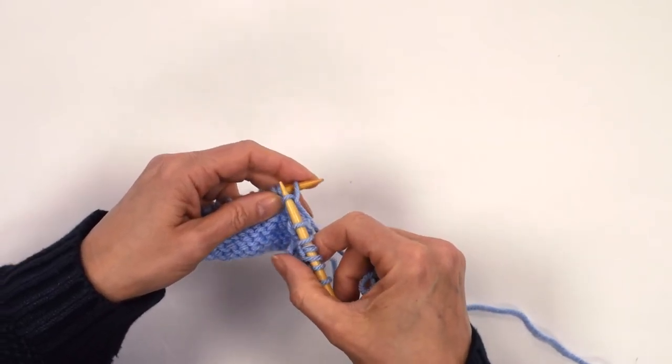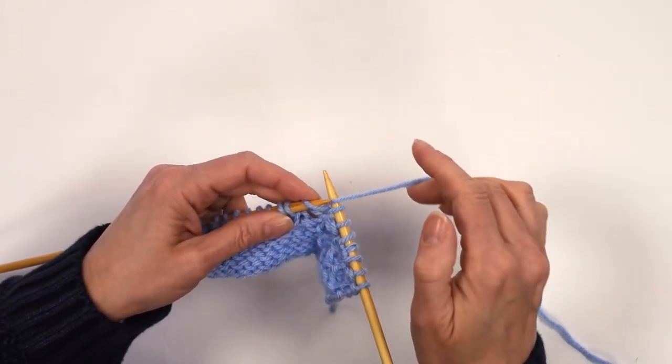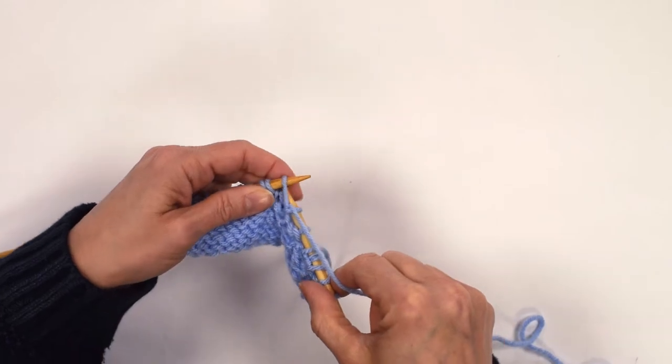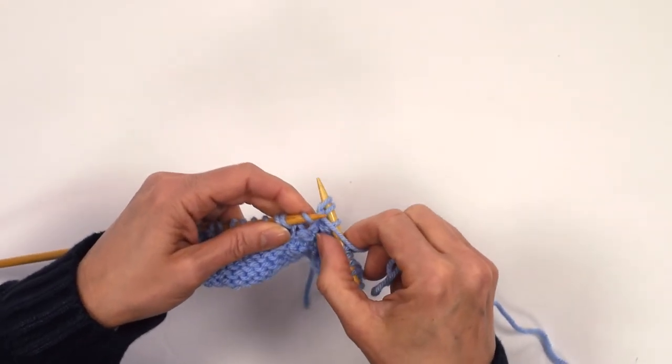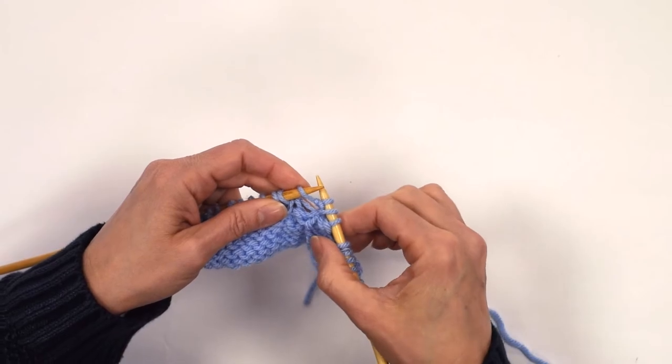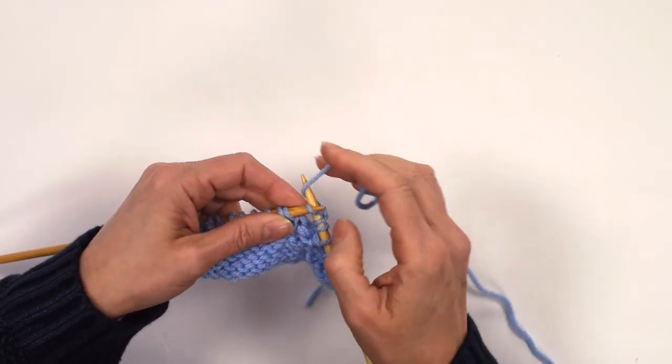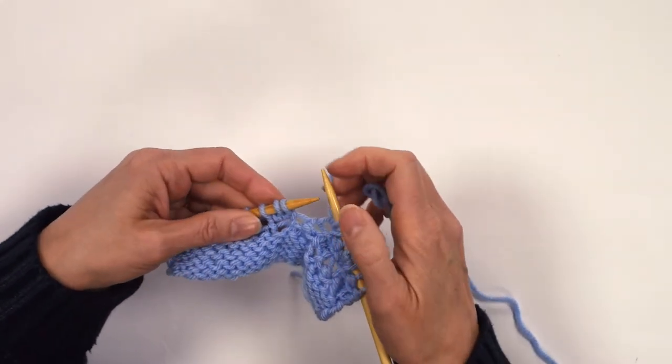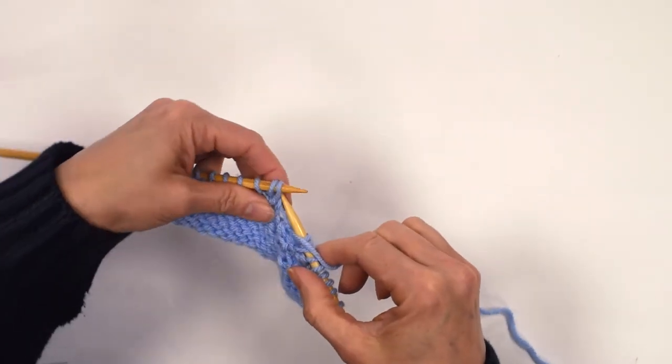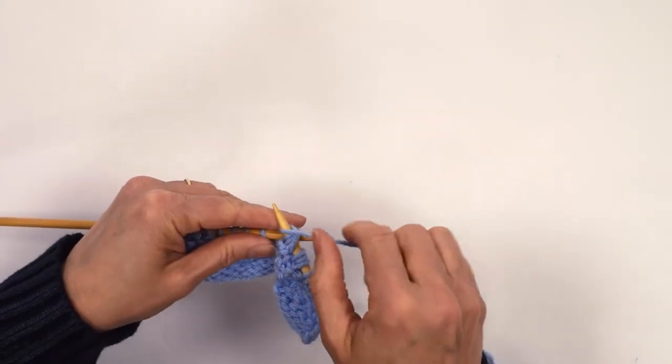So, knit into the front of it, bring the yarn back between your needles, purl, take the yarn back between the needles, knit. Then bring the yarn this way, purl three together.